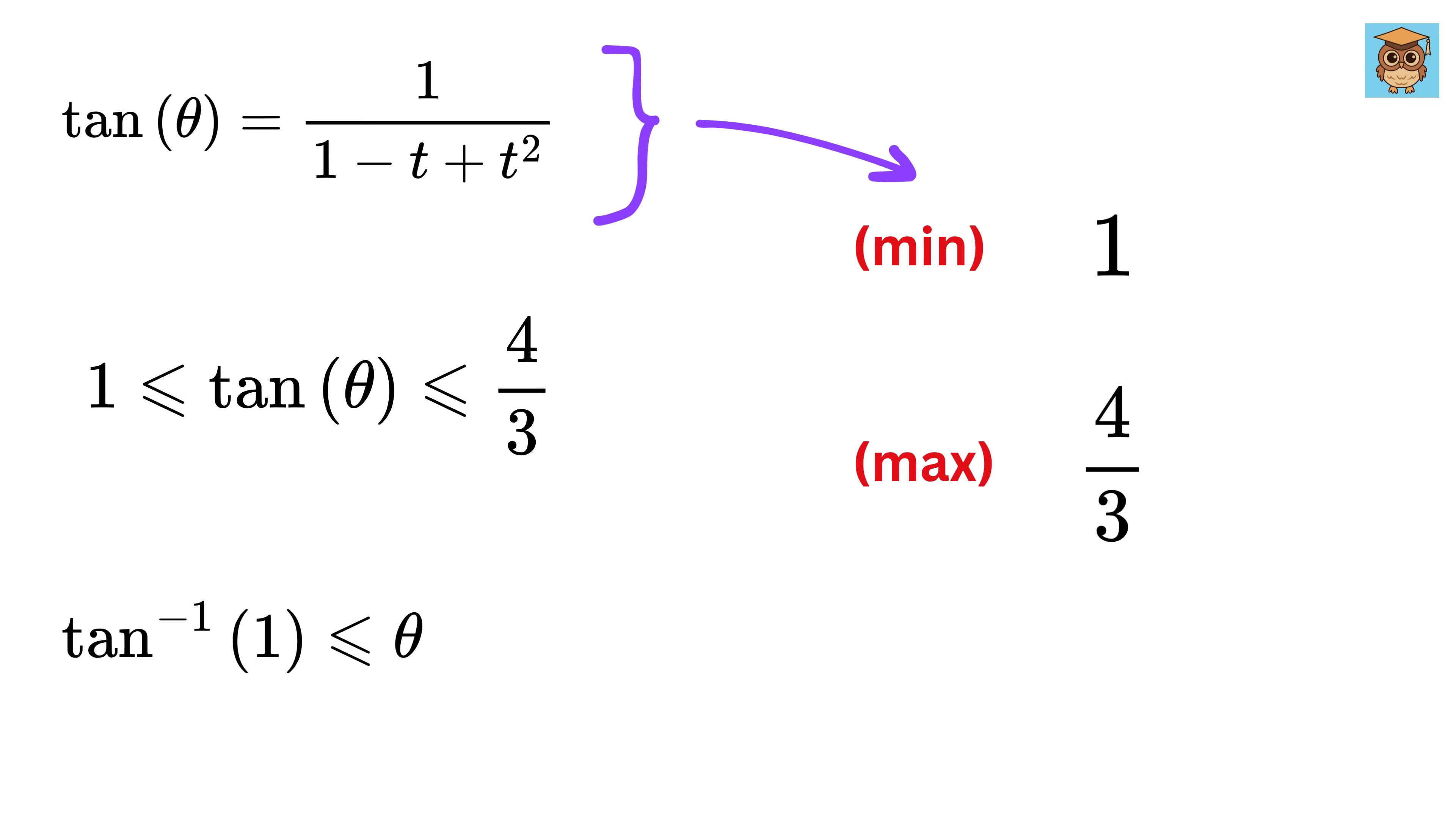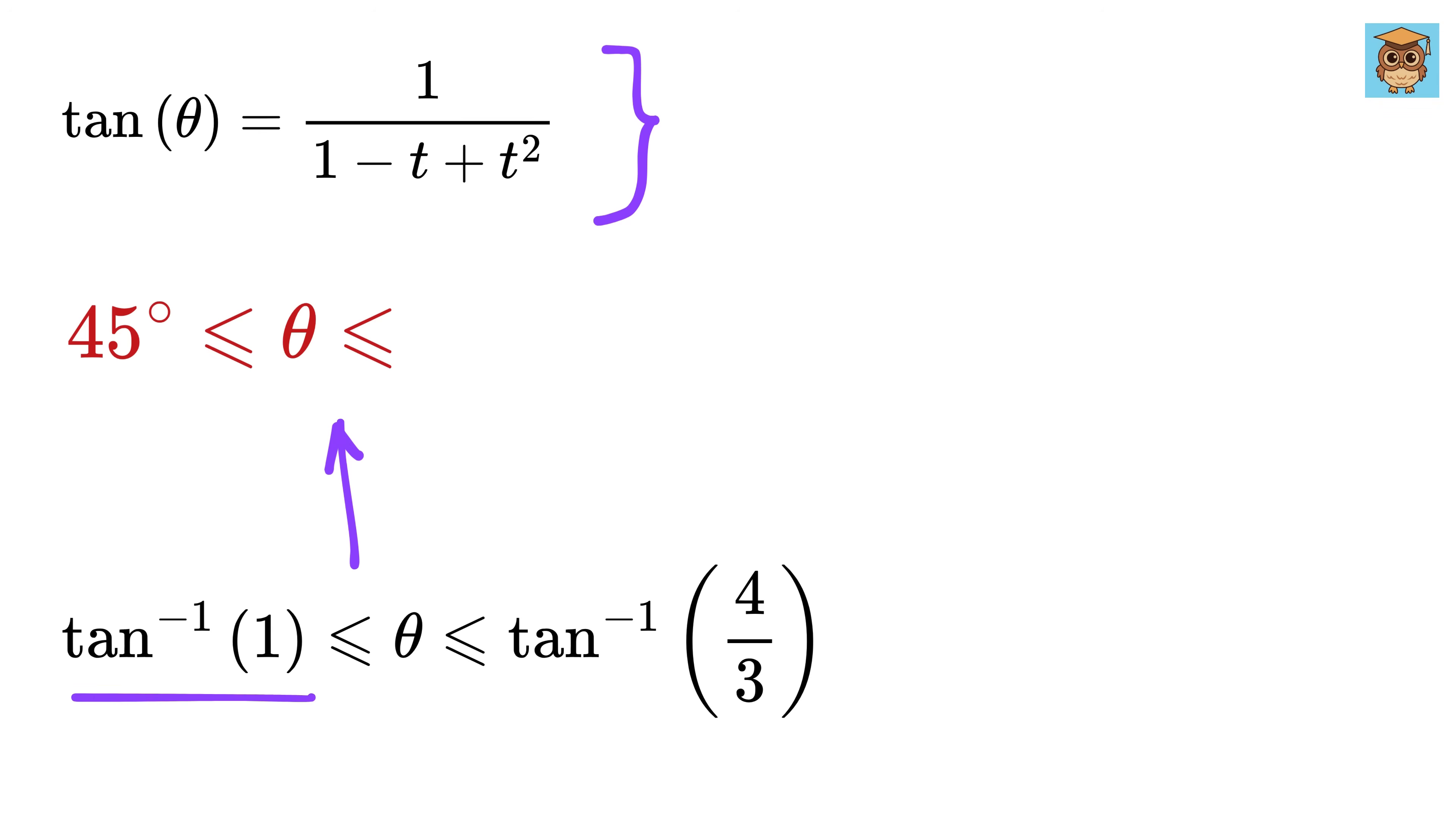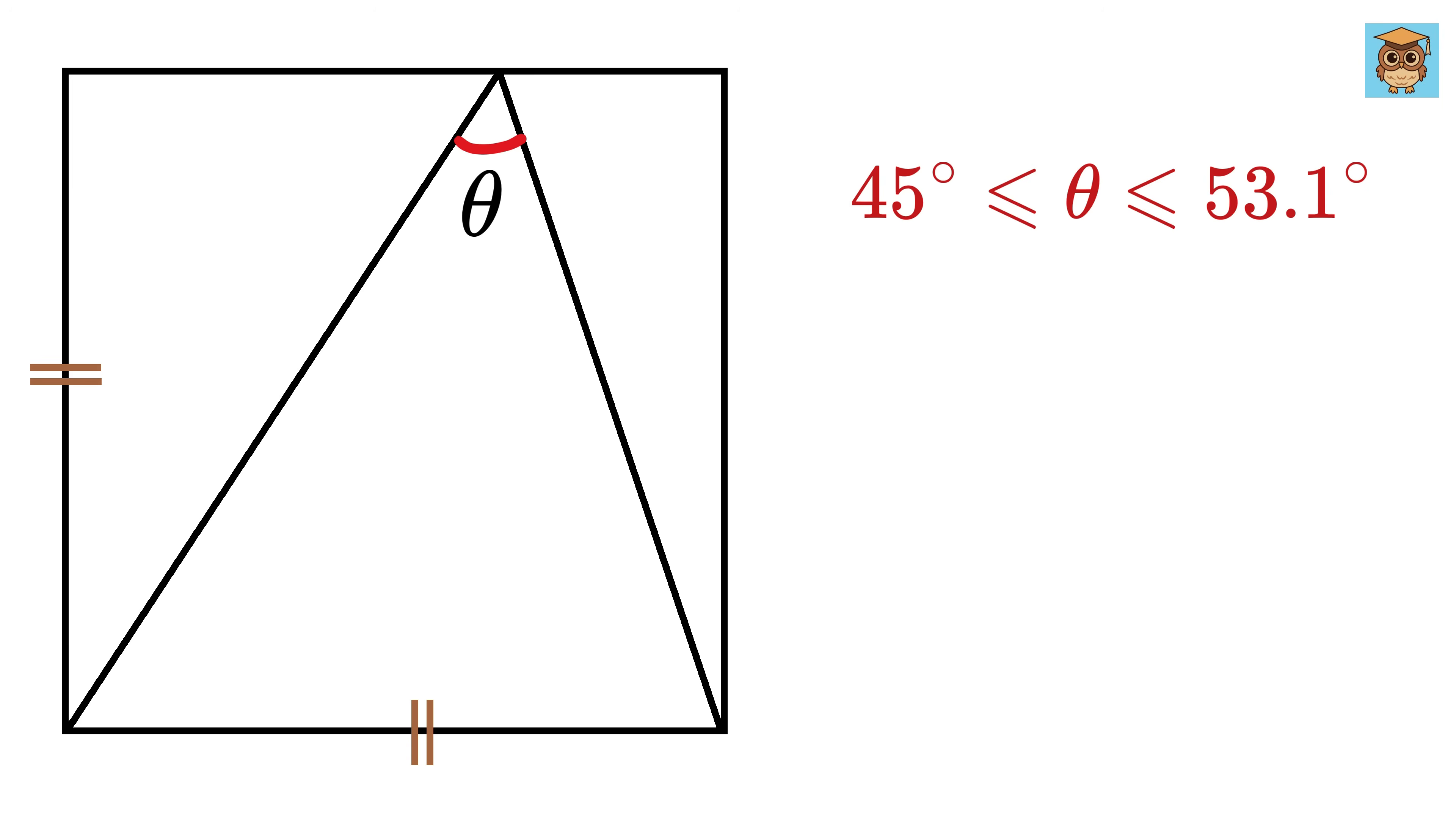Now taking tan inverse on both sides, we get that theta lies between tan inverse of 1 and tan inverse of 4 over 3, which is 45 degrees and approximately 53.1 degrees. And that's it. This way we found the full range of theta without ever needing the side length of the square. That was simply awesome!